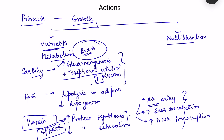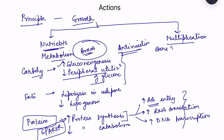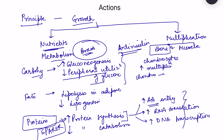Growth hormone has an anti-insulin action, increasing insulin resistance, so that fuel is available rather than stored. The best growth effects are on bone and muscle. In bone, chondrocytes deposit more protein at the ends of bones and undergo increased multiplication, then convert to osteogenic cells, strongly stimulating osteoblasts to deposit bone on the cartilage.